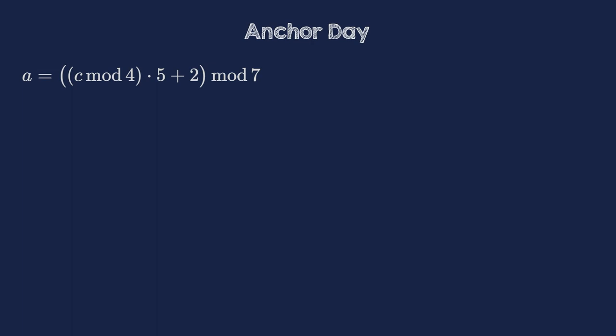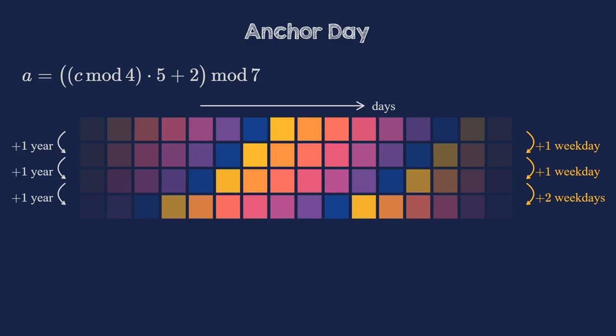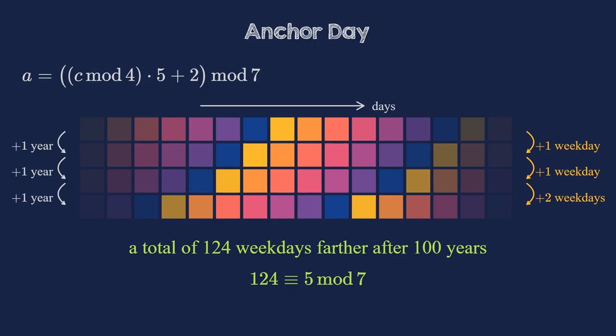Going back to the formula for the anchor day, we see that the c mod 4 takes care of the 400-year-long leap year cycle. The next important fact to realize is that the weekday of a given date moves forward by one each year. That's because 365 is 52 times 7 plus 1 and therefore congruent to 1 mod 7. For example, the 3rd of October 2022 is a Monday and the 3rd of October 2023 is a Tuesday. And if there is a leap day in between, we move forward by two weekdays that year. So, over the course of 100 years, we move forward 100 weekdays, but we also have 24 leap years, so it's a total of 124 weekdays. Since 124 is 17 times 7 plus 5, which is congruent to 5 mod 7, we can just move 5 weekdays forward for every 100 years to get the same result. And that's what the c mod 4 times 5 computes. Finally, the plus 2 shifts everything to the correct starting place.